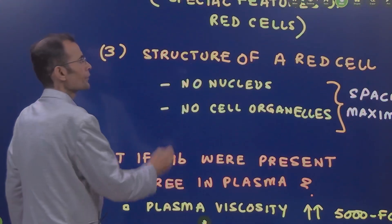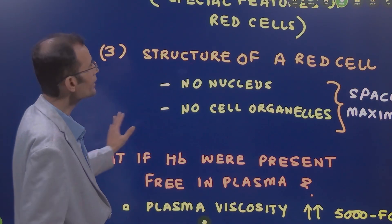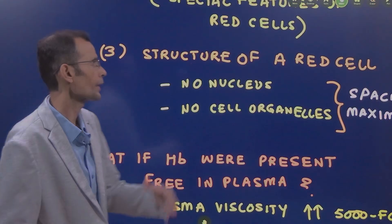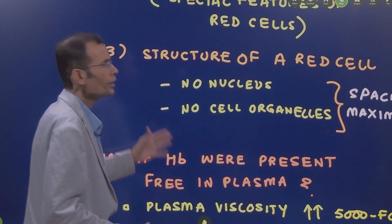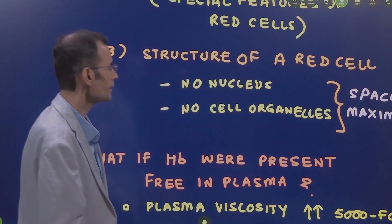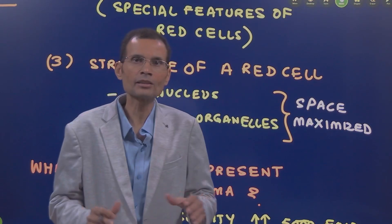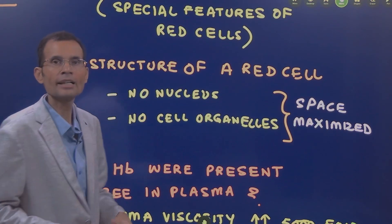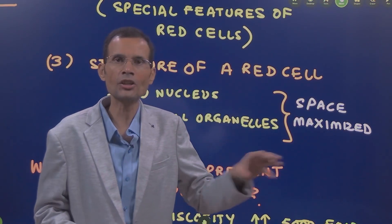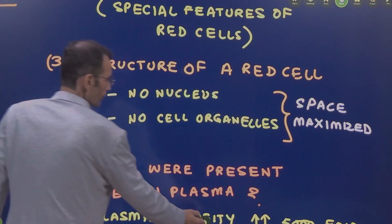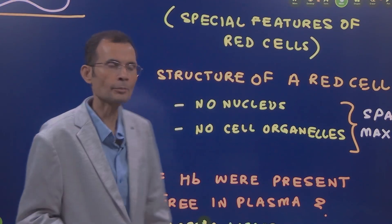The third advantage is the structure of the RBC. The RBC has no nucleus, and most of the cell organelles are also not present in RBCs. This creates a space maximization — there is a lot of space inside the RBCs because it lacks these structures, and therefore the amount of hemoglobin can be higher inside each RBC.